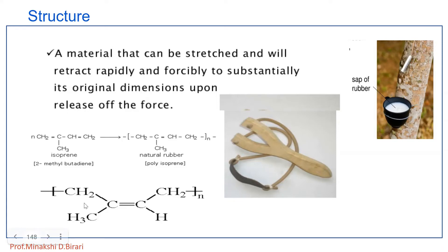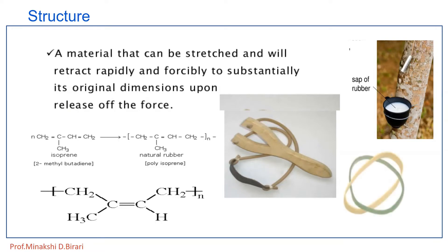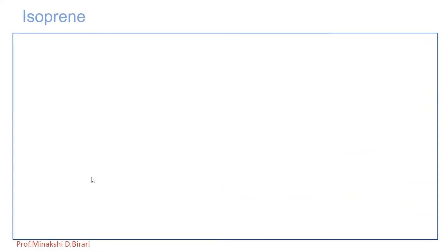Isoprene units are the repeating units — 2-methyl-1,3-butadiene joined to each other in cis geometry — and this is the structure of natural rubber.